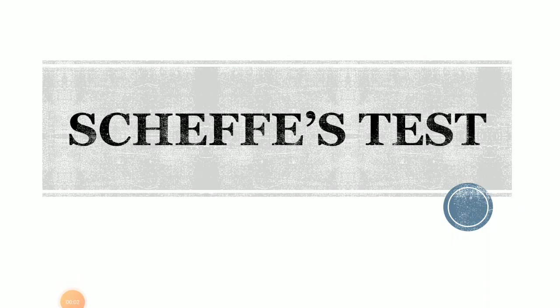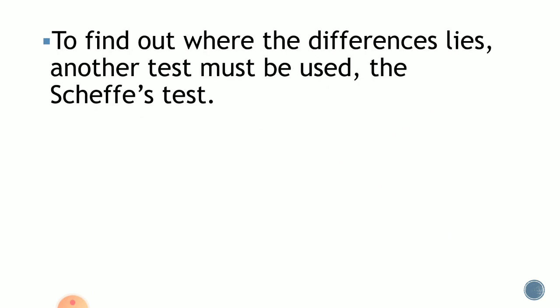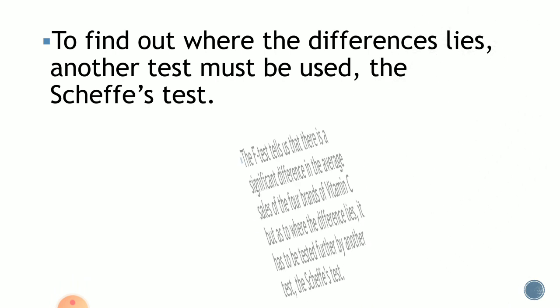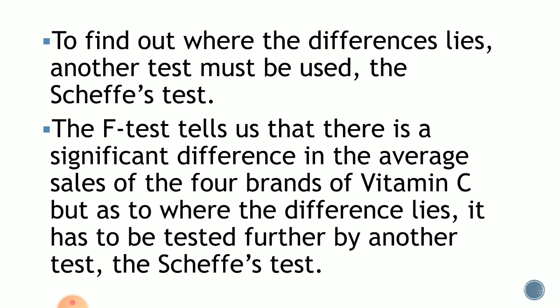In this video, I will discuss the SCIFS test. The SCIFS test is a supplementary test from the previous test, which is the analysis of variance. To find out where the differences lie, another test must be used — the SCIFS test. The F-test, or the ANOVA, tells us that there is a significant difference in the average sales of the four brands of vitamin C, but as to where the difference lies, it has to be tested further by the SCIFS test.